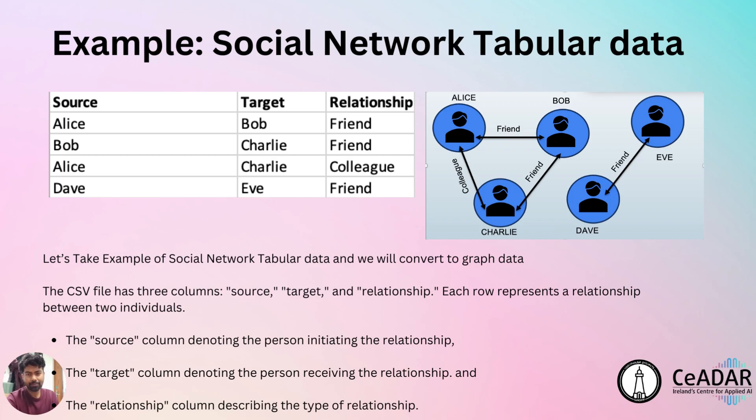Let's take an example of a social network tabular dataset and follow the conversion guidelines previously discussed, with code implementation. The CSV file has three columns: source, target, and relationship. Each row represents a relationship between two individuals — the source column denotes the person initiating the relationship, the target column denotes the person receiving it, and the relationship column describes the type of relationship.